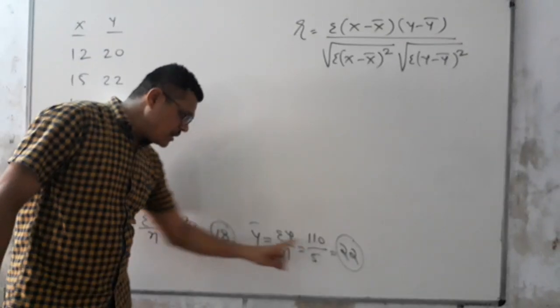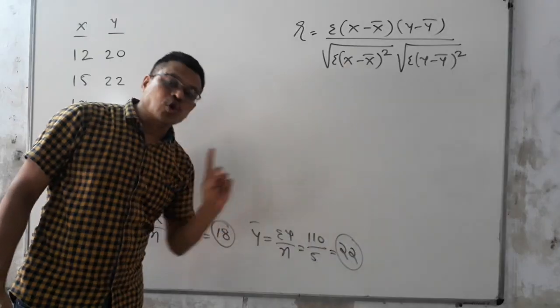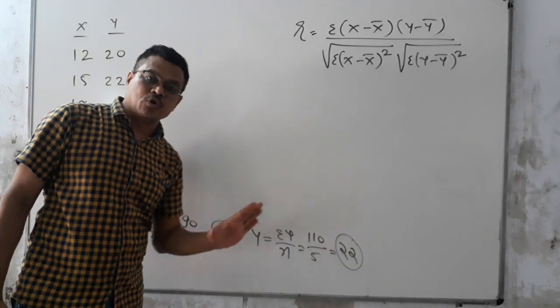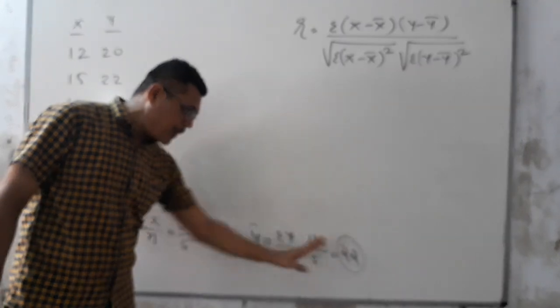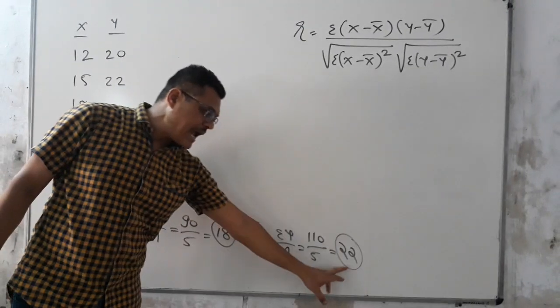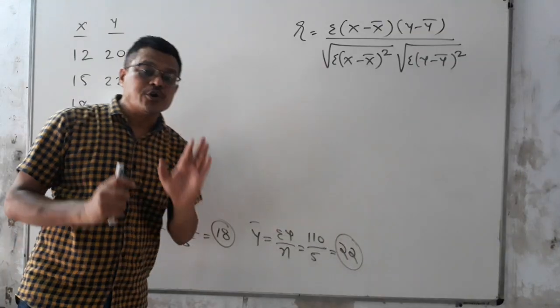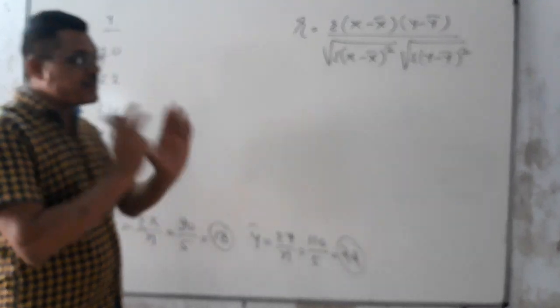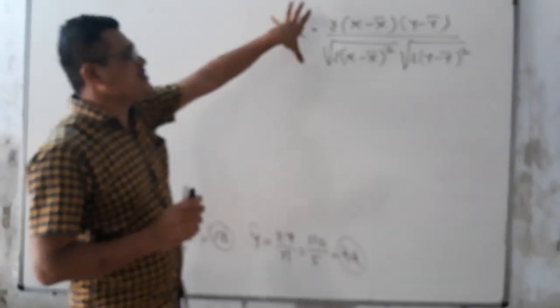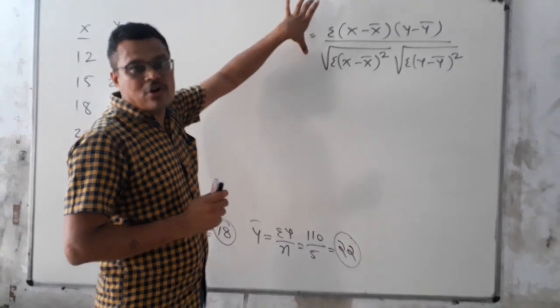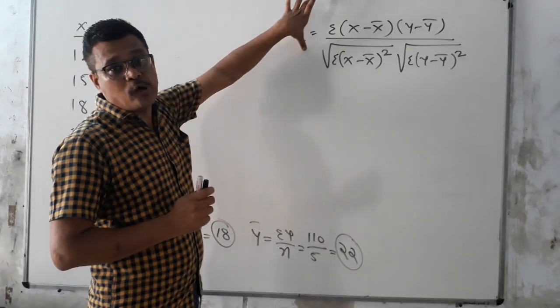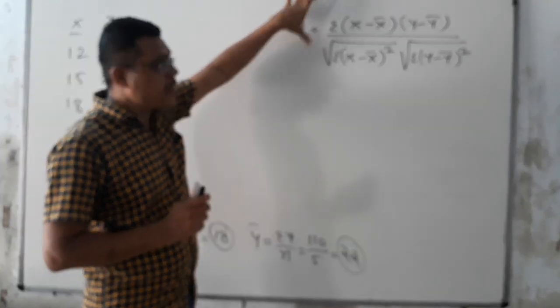Now check: the means are not fractions because we have perfect figures — 18 and 22. So we are using this formula for finding the correlation.